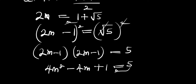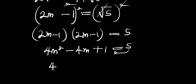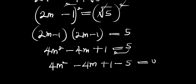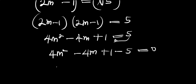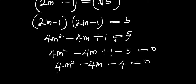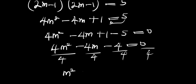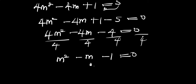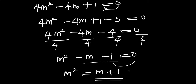Moving the 5 over, we have 4m squared minus 4m plus 1 minus 5 equals 0, which gives 4m squared minus 4m minus 4 equals 0. Dividing each term by 4 gives us m squared minus m minus 1 equals 0. Moving terms over, we have m squared equals m plus 1. Take note of this equation.